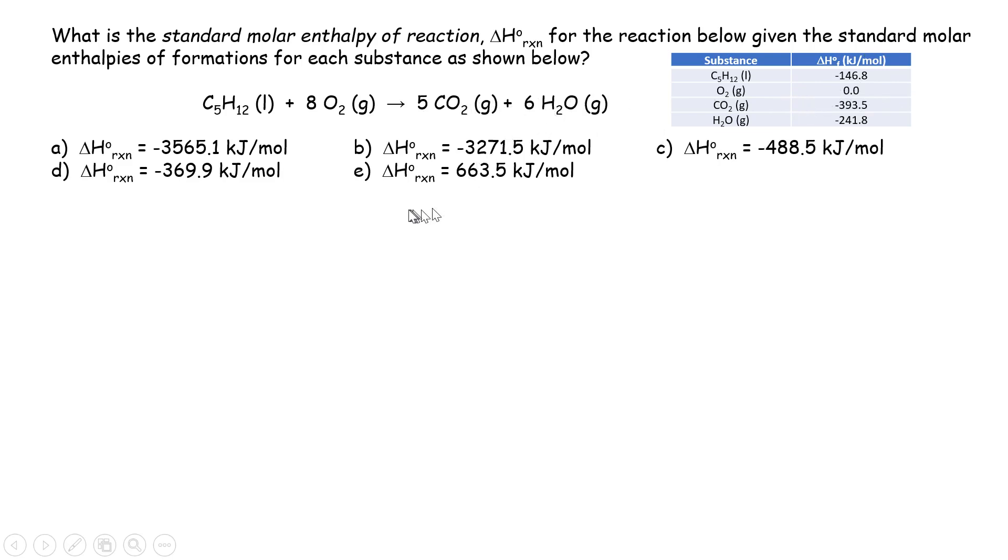Here we have to use this key equation. So the delta H zero of reaction can be calculated by the sum of the standard molar enthalpy of formations of the products, subtracted by the sum of the standard molar enthalpies of formations for the reactants.